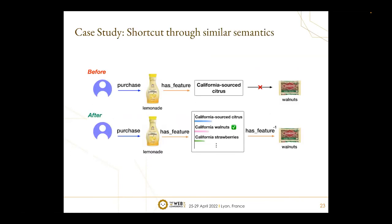We present a case study to show our method's advantage. The example shows how our method discovers the ground truth item — walnuts — which is unreachable with path-finding methods under the three-hop setting. The user previously purchased a lemonade with a feature of California-sourced citrus. In the original KG topology, it is impossible to reach walnuts in three steps. However, California-sourced citrus suggests a potential preference for California-produced products. Our method captures this latent behavior pattern, generates other California-related features, and thus recommends the walnuts, demonstrating the ability to learn semantics and infer shortcuts to further recommendation items.